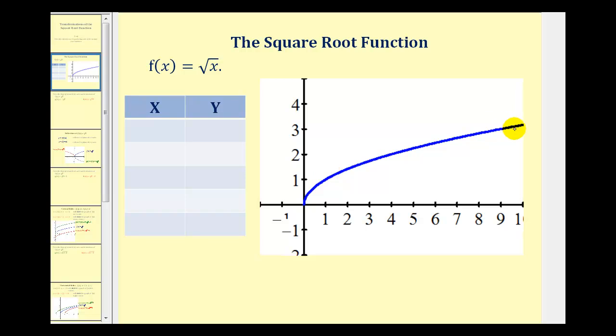In blue, we have the graph of the square root function. But if we wanted to determine actual coordinates of points on this graph, we would complete a table of values. And to do this, it would be convenient to select x values that were perfect squares.